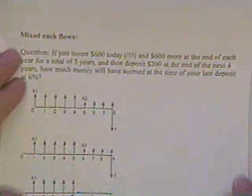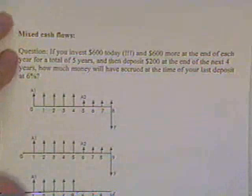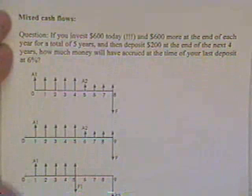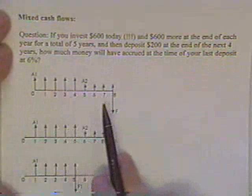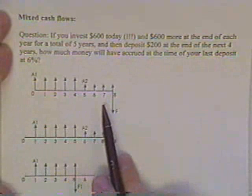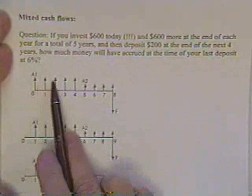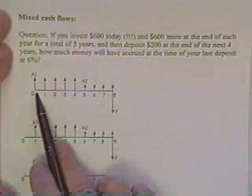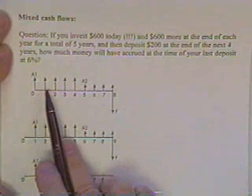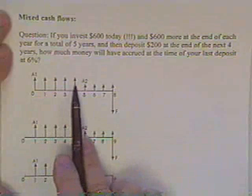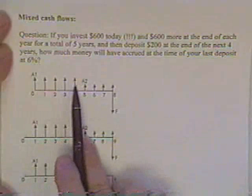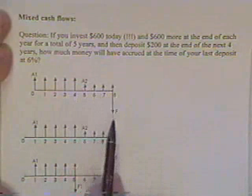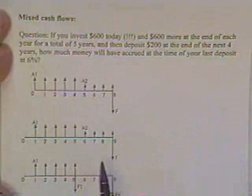Now sometimes you have some strange-looking cash flows. For instance, if you invest $600 today and $600 at the end of years one, two, three, and four—that's for five years—and then you start depositing $200 at the end of the next four years, how much money can you take out of the bank?